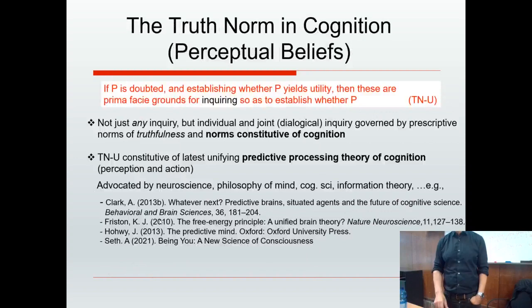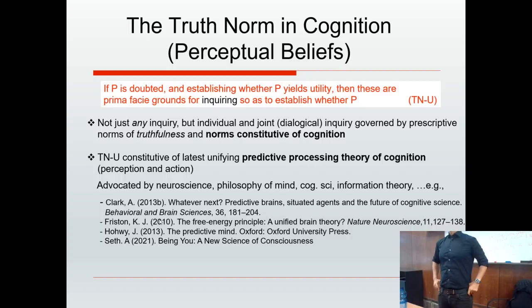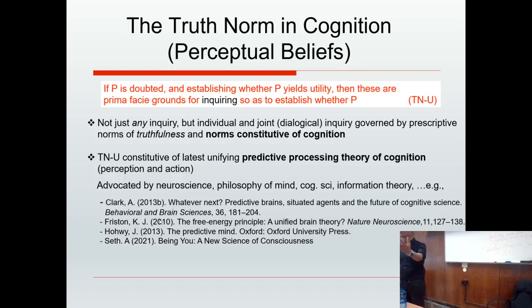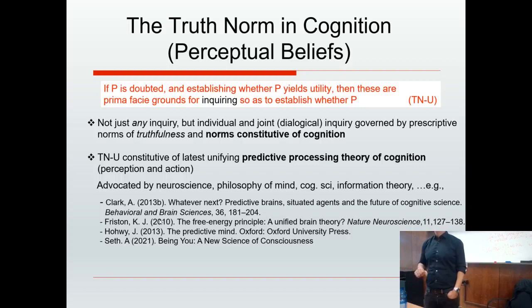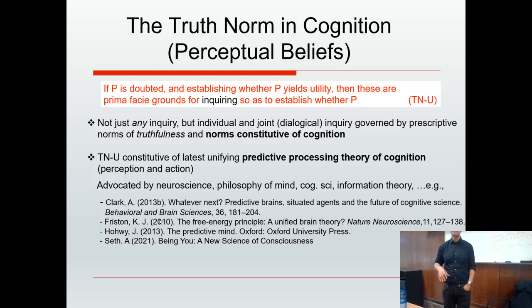Now I want to talk about how the truth norm applies to perceptual beliefs like 'the glass of water is on the table.' The answer can be found by looking towards recent work in predictive processing theories of cognition — these are all the range at the moment, proposed as a unifying account of cognition, perception, and action, with people working across neuroscience, computational neuroscience, philosophy of mind, and the cognitive sciences. A book I really liked recently is Anil Seth's 'Being You: A New Science of Consciousness,' which tries to explain the phenomenology of consciousness in terms of this predictive processing theory.